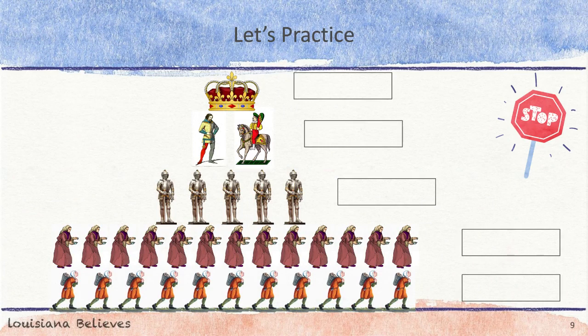Now you are ready to think about how the feudal system worked in the Middle Ages. Complete the organizer by filling in each social class from the choices in the word box. Then list one to two important ideas about each group on your handout. Pause this video to complete the chart on your handout at stop sign number one, then hit play when you are ready to continue.